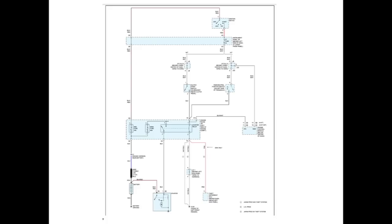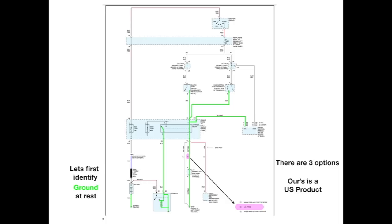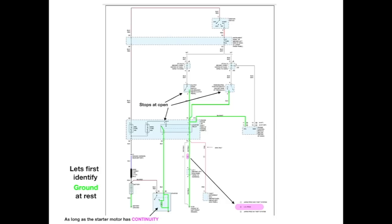Here's our basic diagram for the 2000 Corolla. First let's identify the ground at rest — we're going to be coloring the ground at rest green. There are three options on this diagram; we have a US product so we're going to be using option number two. All the grounds travel up until they stop at an open. As long as the starter has continuity, the ground is going to travel right through it. There's also a ground that goes to the ECM — that's the supply ground to the ECM — shown as a dotted box representing just these two points going into the ECM.